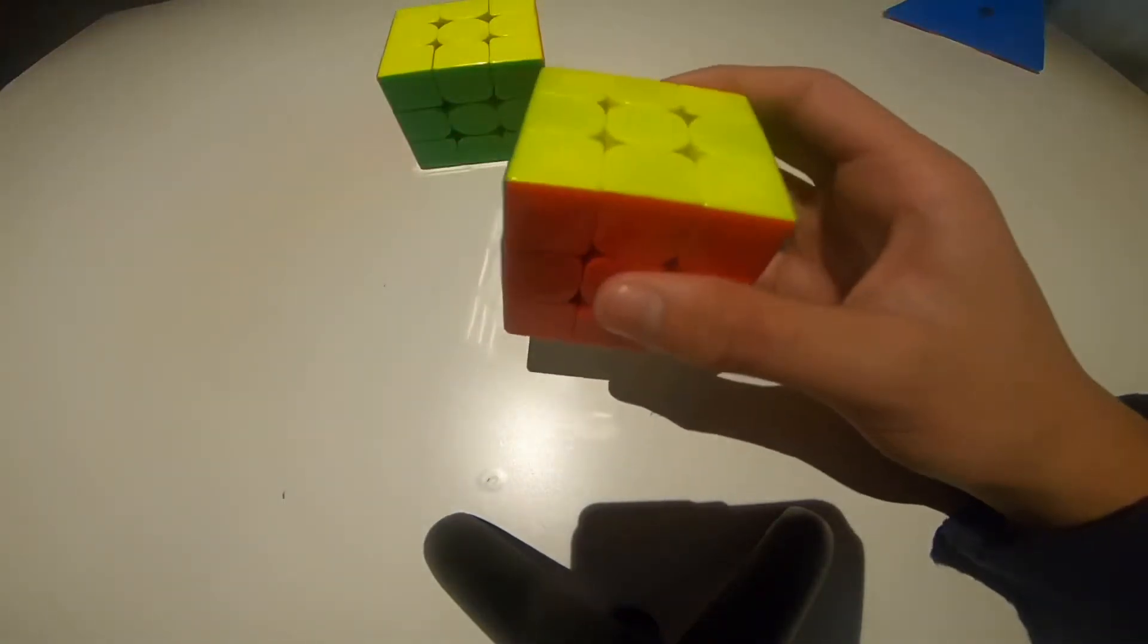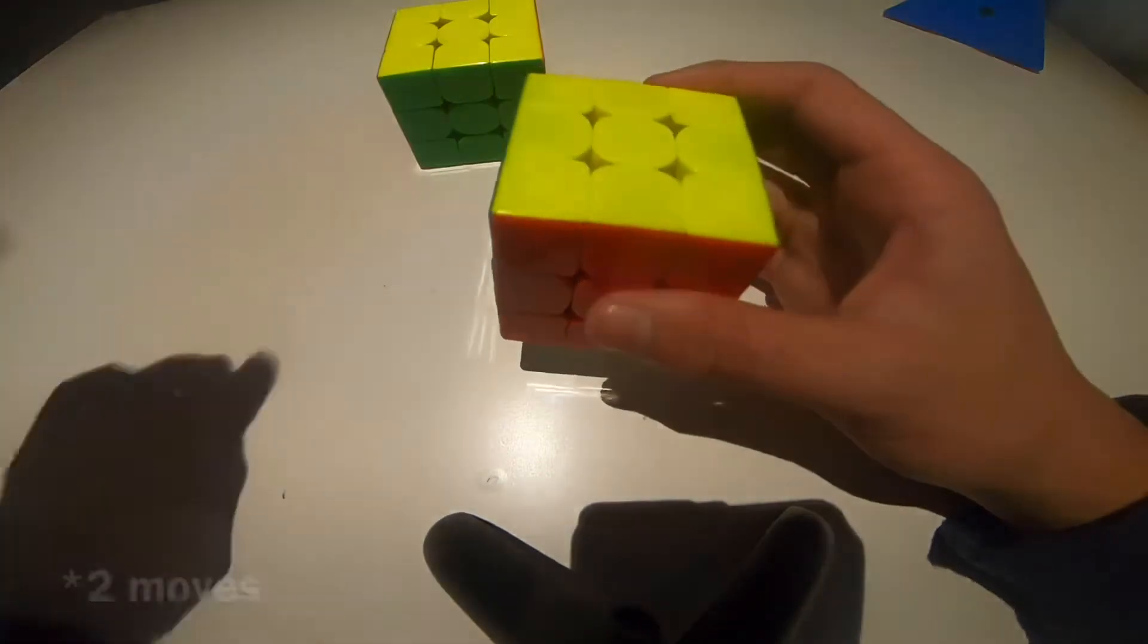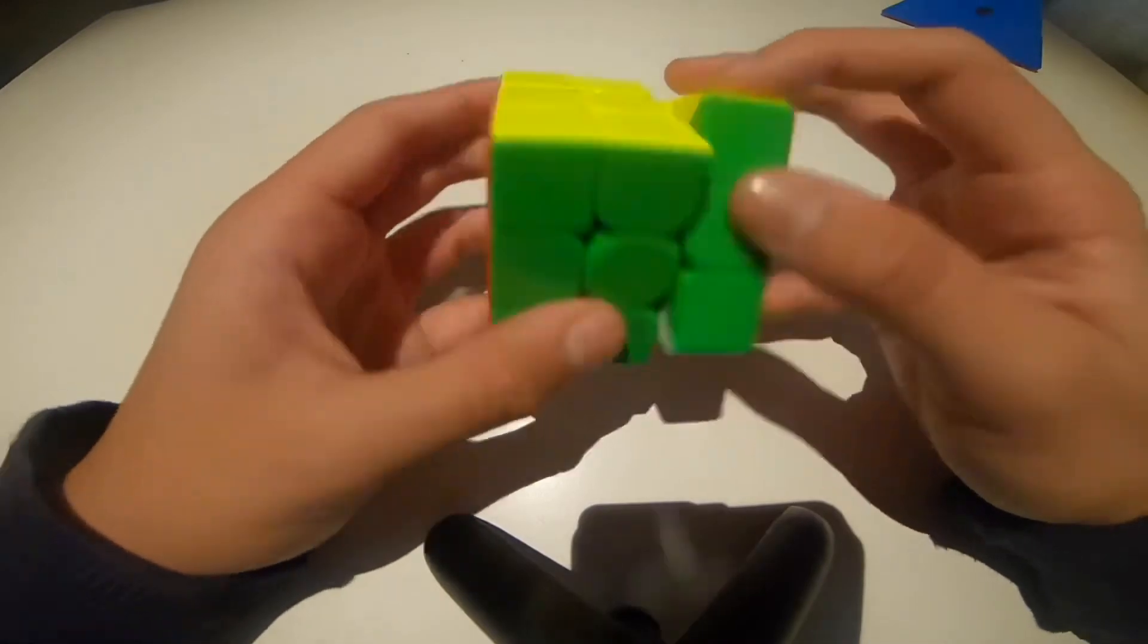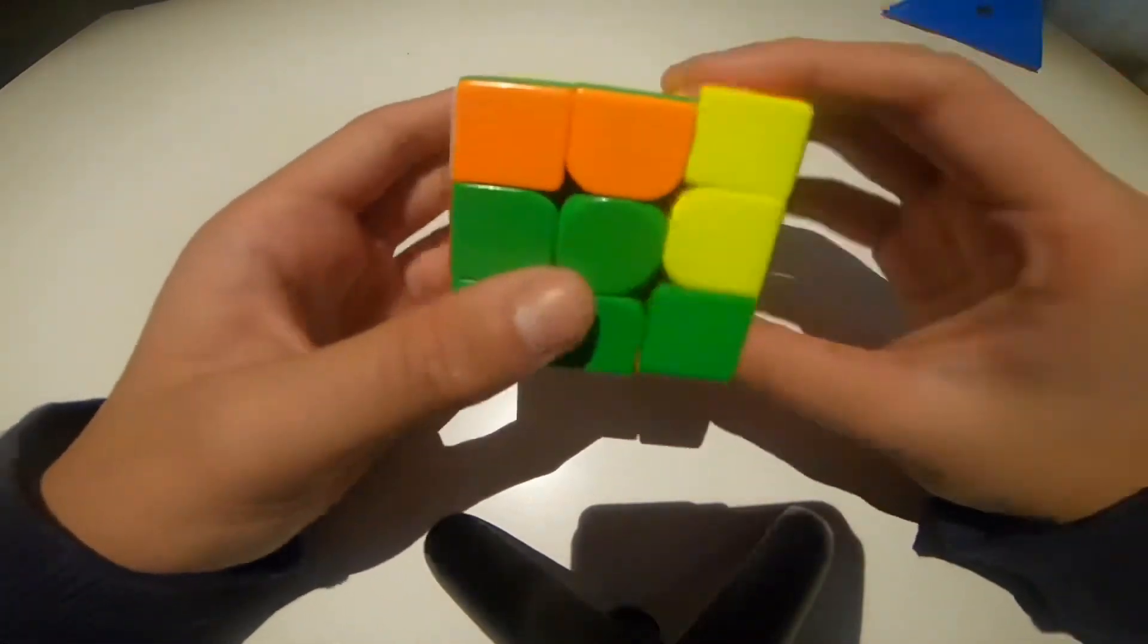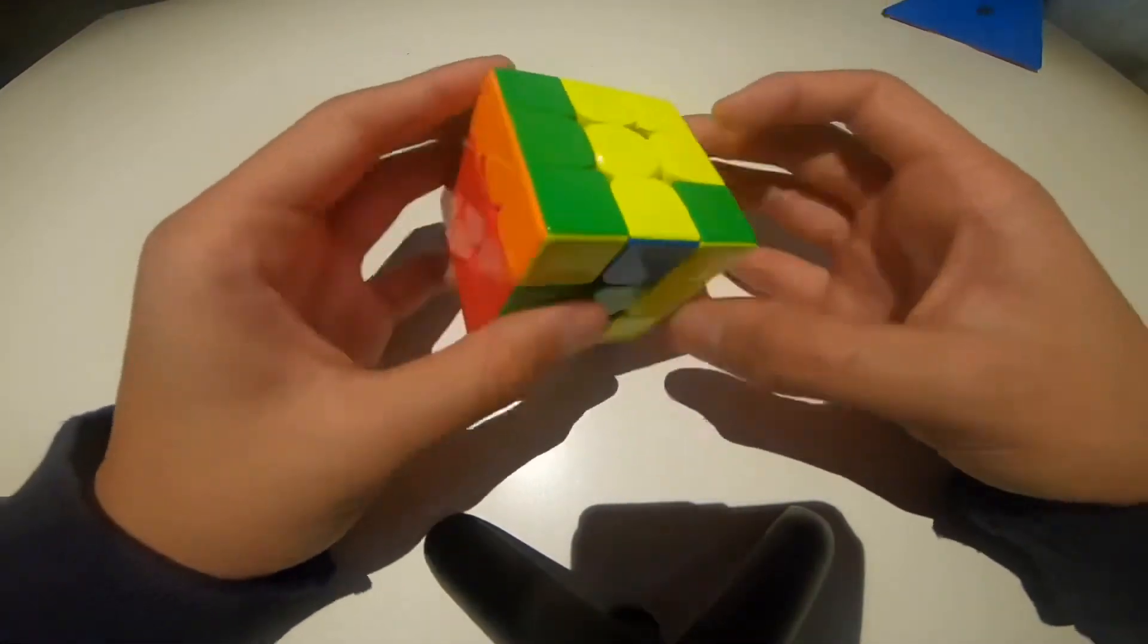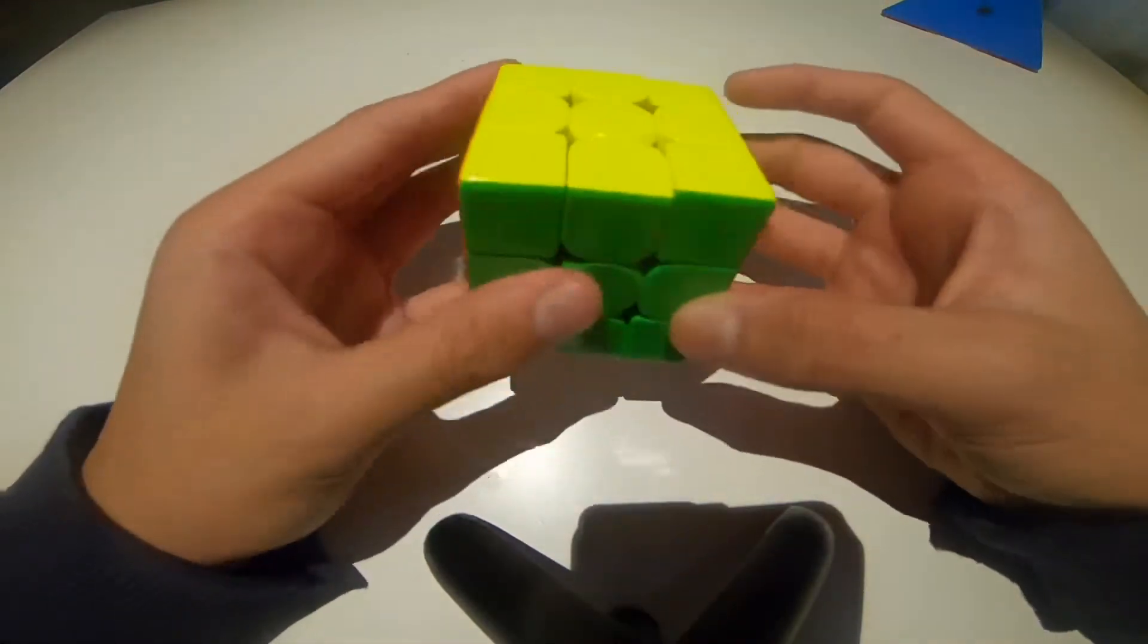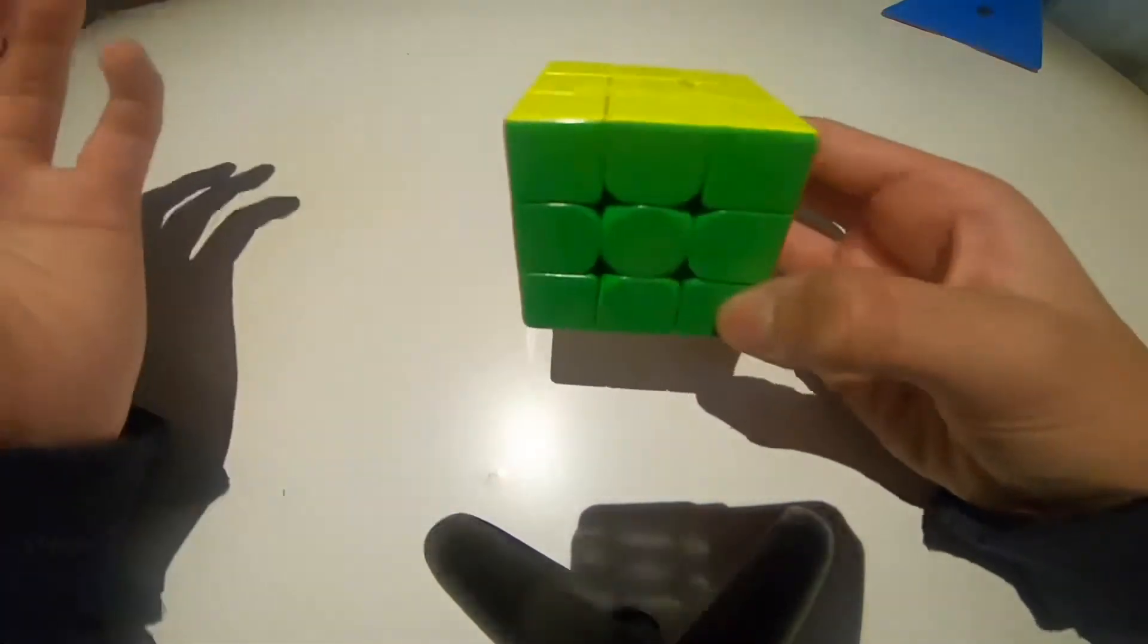But how come am I able to just change one move? Well, it's all about cancellation. Think about doing R U R' and then do R U R' again. If you look at this right now, you really could have done R U2 R'. So that's kind of what I'm doing here.